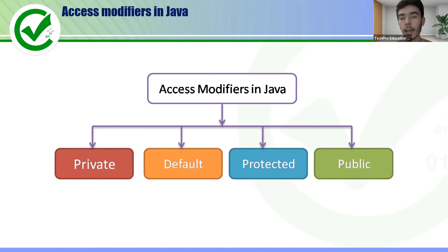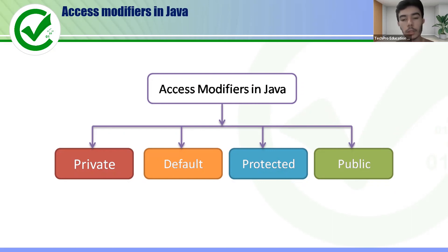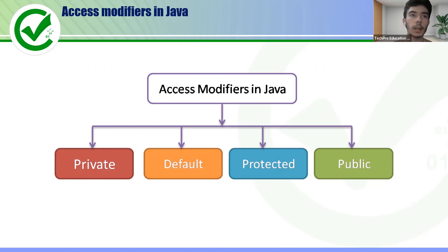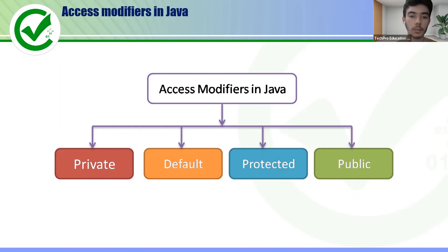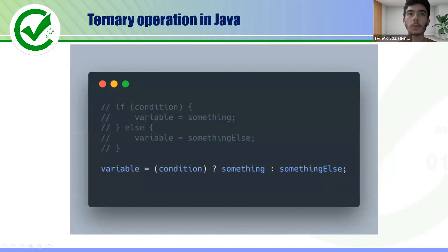Finally, public means you can access the class, variable, or method from anywhere — from other classes, outside the package, inside the package — it doesn't matter whether you have a child relationship or not. Public is the lowest-level access modifier and private is the highest-level access modifier.